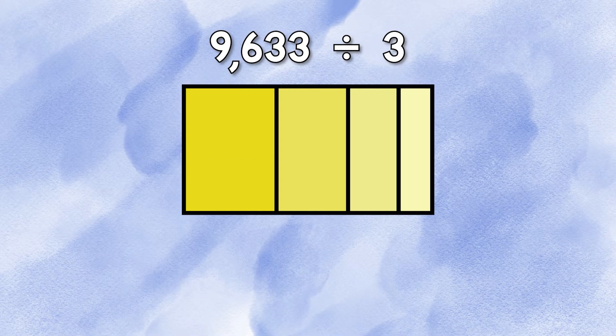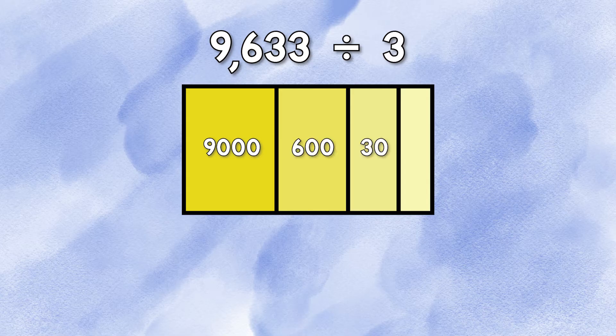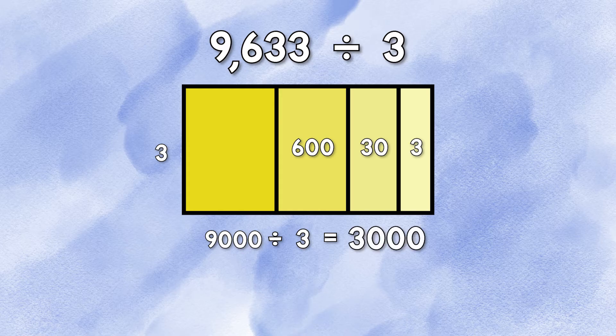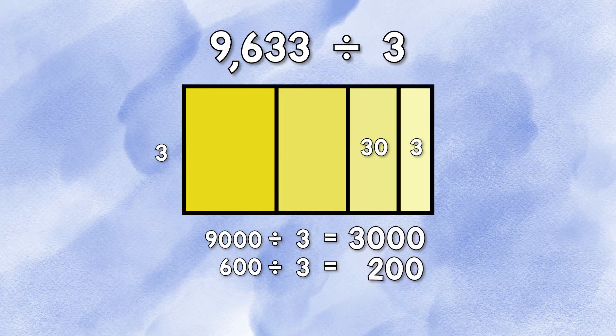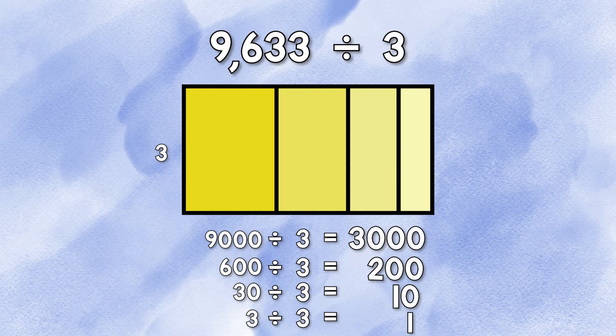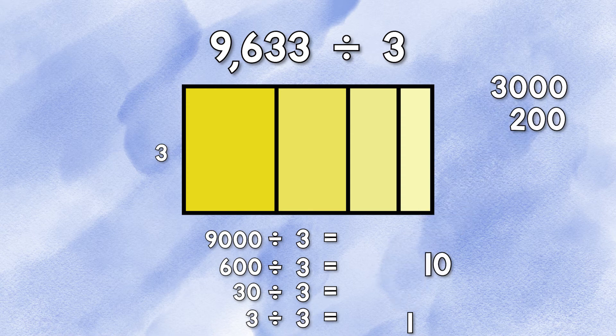9633 divided by 3. We're going to first break it down by place value into 9000, 600, 30, and 3. Let's divide. 9000 divided by 3 is 3000, 600 divided by 3 is 200, 30 divided by 3 is 10, and 3 divided by 3 is 1. All right, let's add up our partial quotients to get our answer.